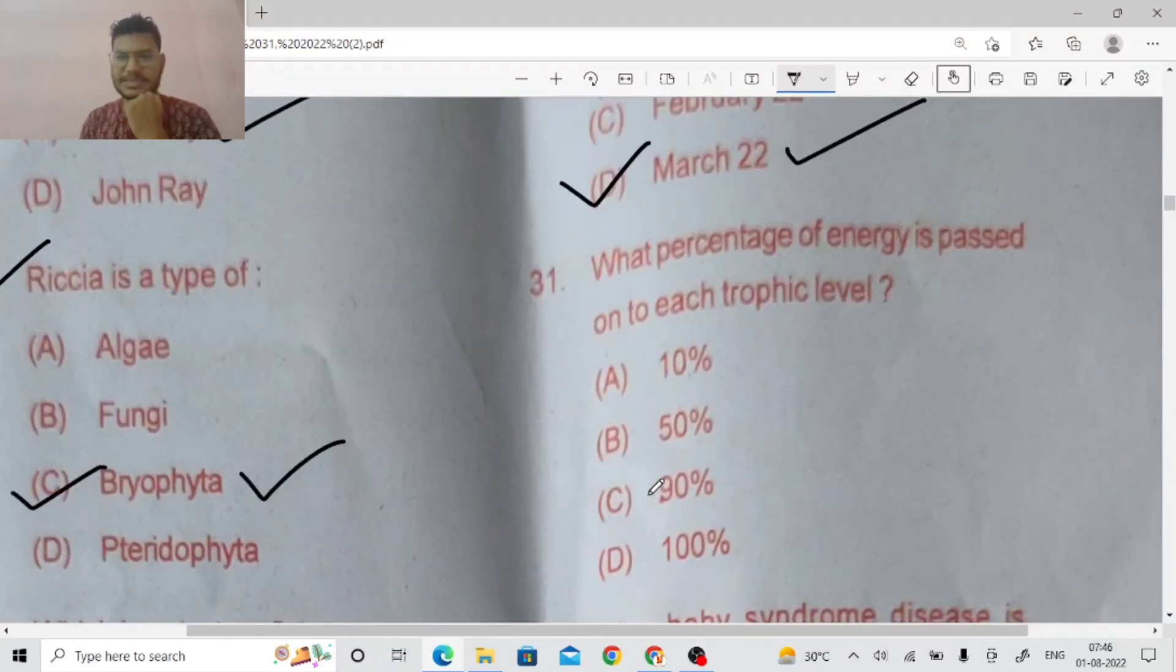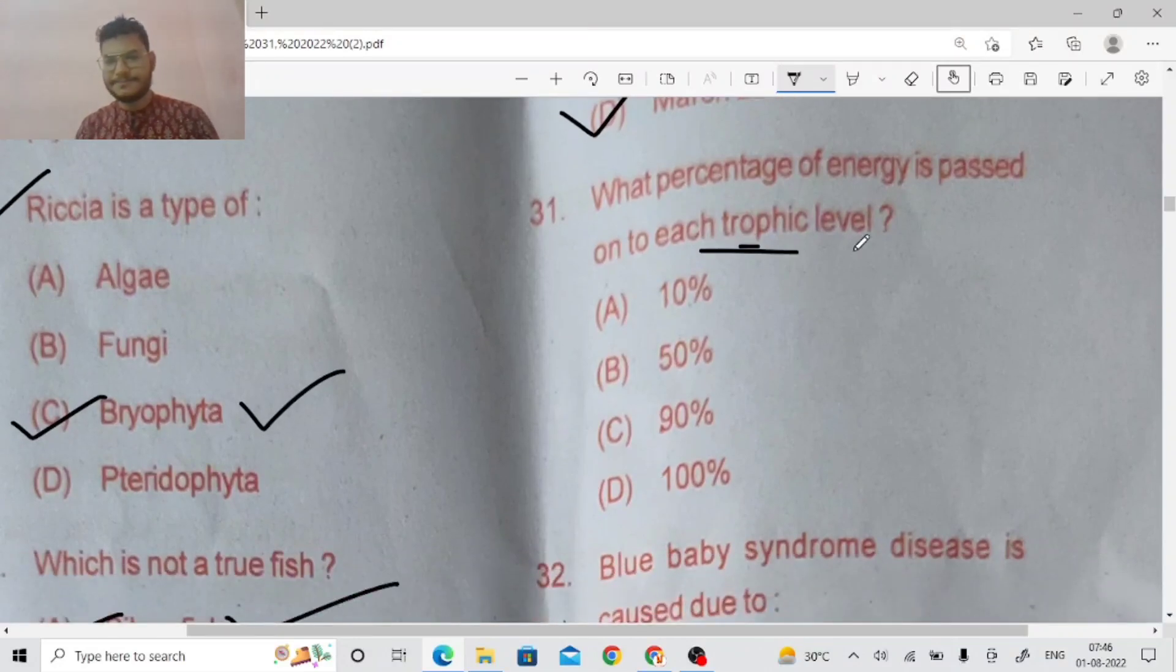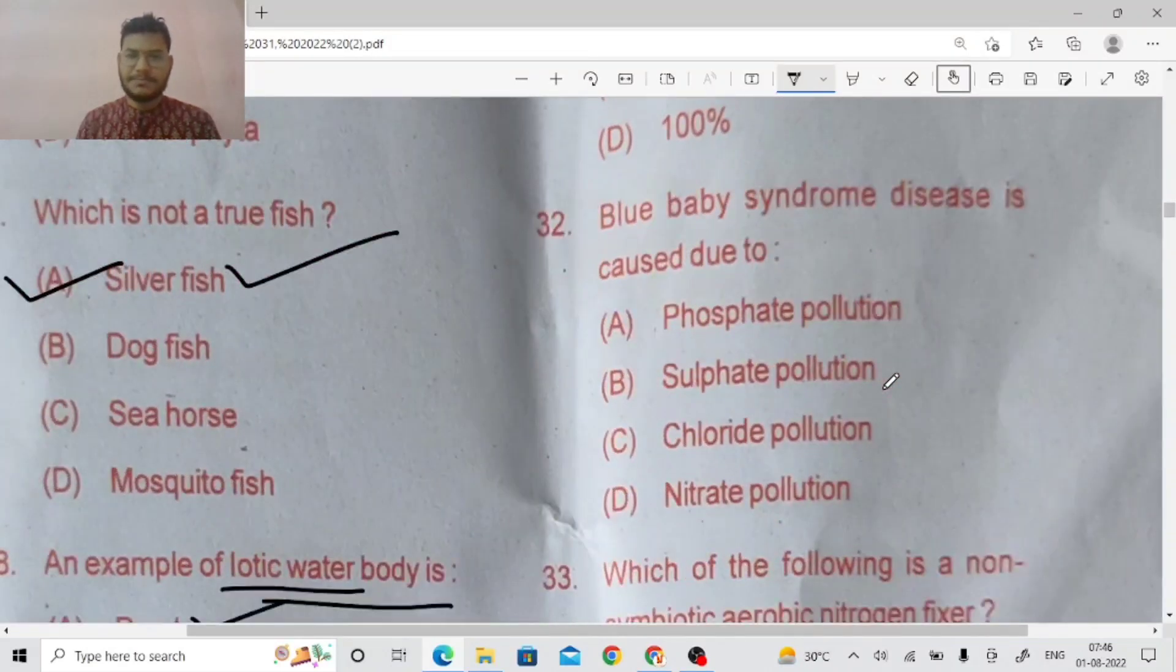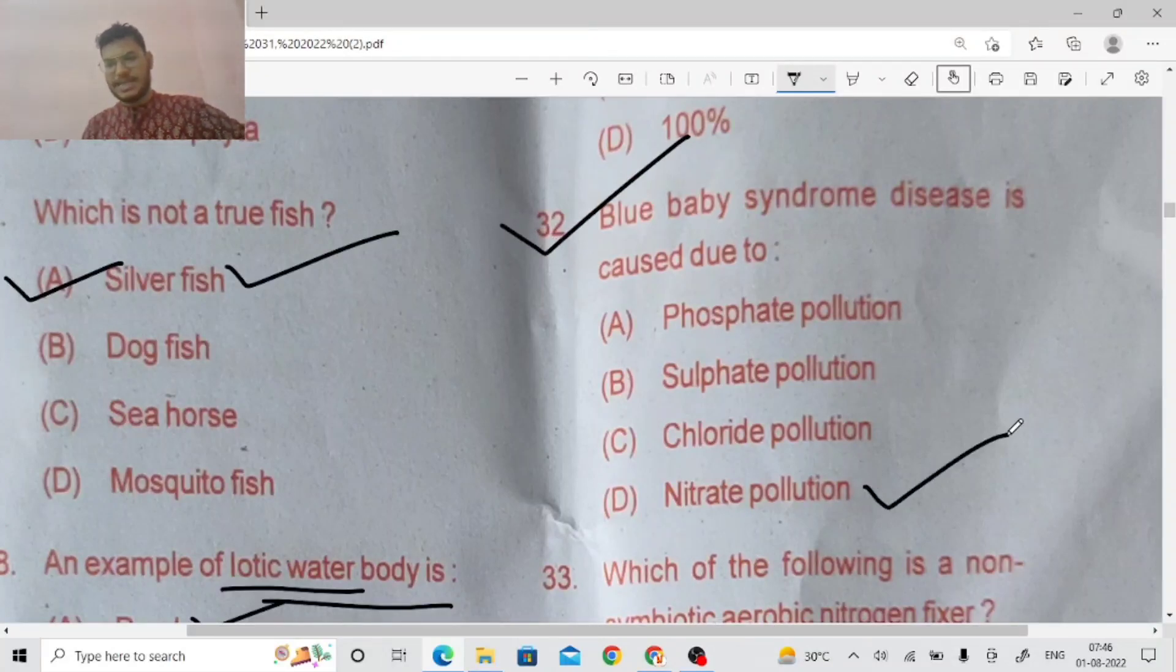What percentage of energy is passed on to each trophic level? Eltonian rule, 10% rule. Yes, 10% only. Blue baby syndrome disease, it's caused due to water with high nitrate content. So right answer is D.